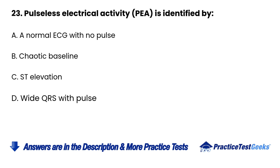23. Pulseless electrical activity (PEA) is identified by: A. A normal ECG with no pulse. B. Chaotic baseline. C. ST elevation. D. Wide QRS with pulse.